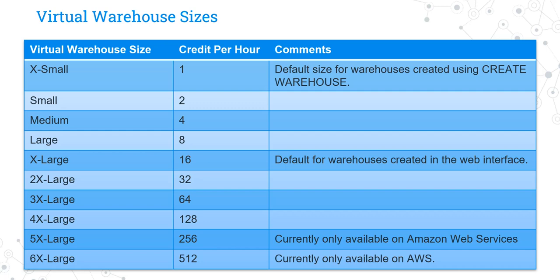Each of these virtual warehouse sizes comes with some credits. Here are the credits per hour: if you are using extra small, you are going to spend 1 credit per hour. For small, it is 2 credits. For medium, it is 4 credits. For large, it is 8 credits and so on. You'll notice the credits double from each size to the next — extra small to small is 1 to 2, small to medium is 2 to 4. This credit-per-hour and warehouse size information is important because questions frequently get asked on this in certification exams.